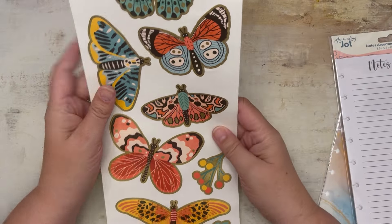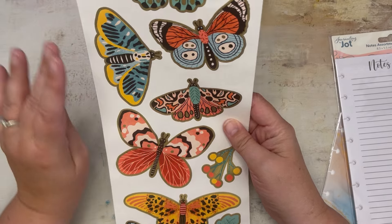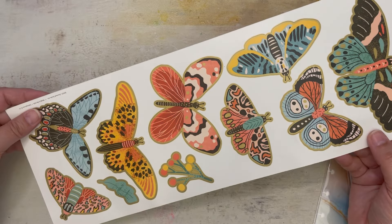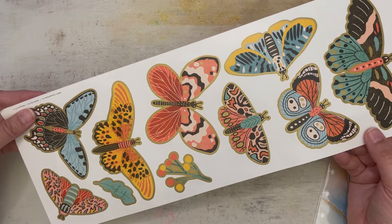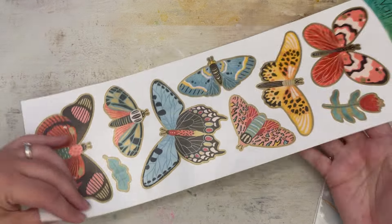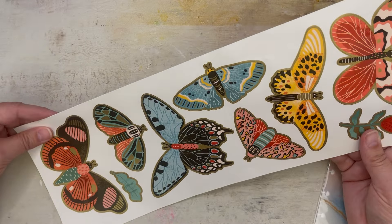The butterflies. See, I have a whole butterfly themed project. But look at these beautiful stickers. Aren't they great? They could be boho. They could go summer. I just think they're really pretty.